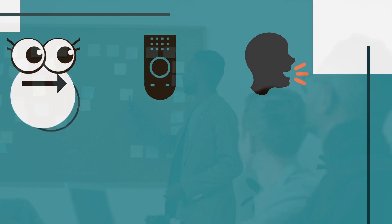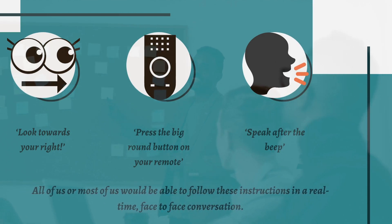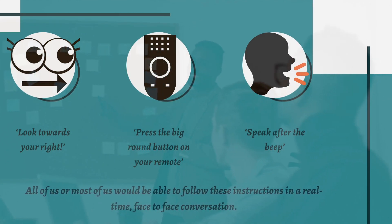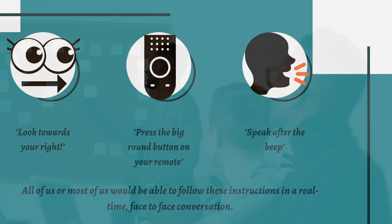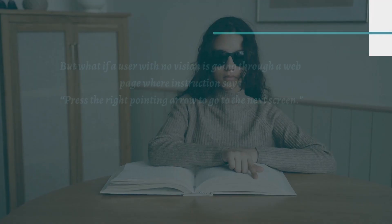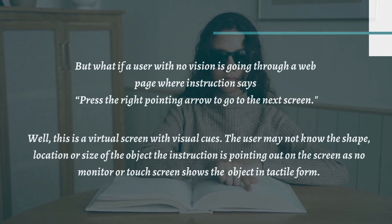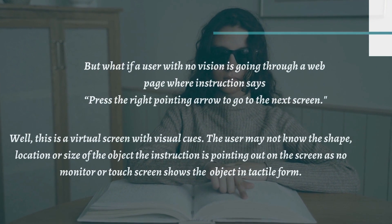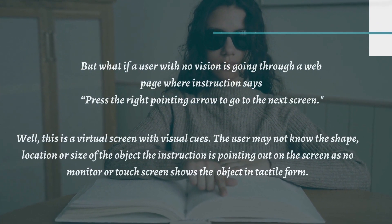Look towards your right. Press the big round button on your remote. Speak after the beep. All of us, or most of us, would be able to follow these instructions in a real-time face-to-face conversation. But what if a user with no vision is going through a web page where the instruction says: press the right pointing arrow to go to the next screen?